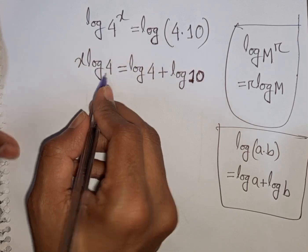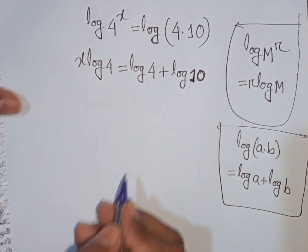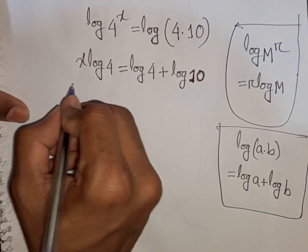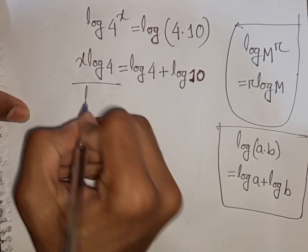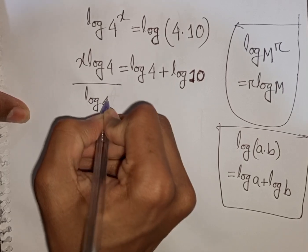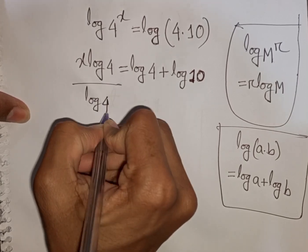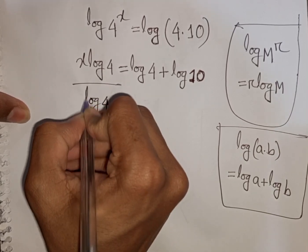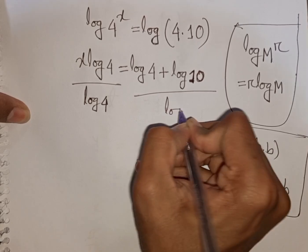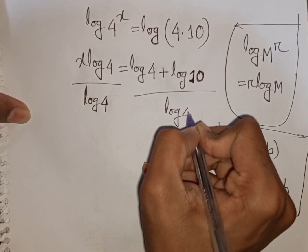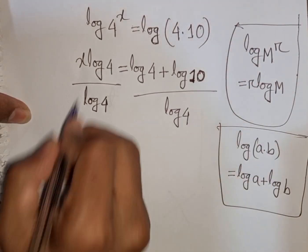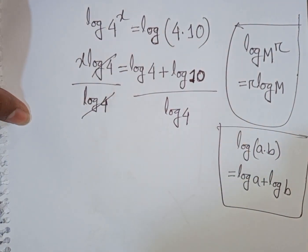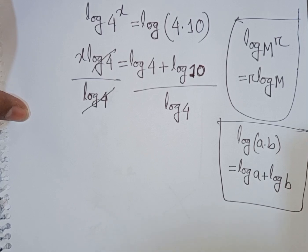Now, we divide both sides by log 4 because we need the value of x. So dividing by log 4, this log 4 on the left side will be cancelled.